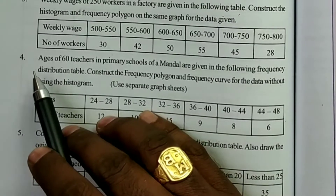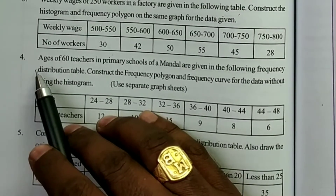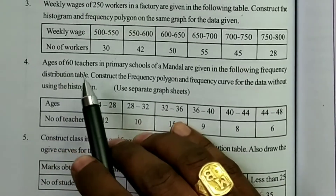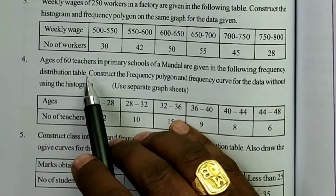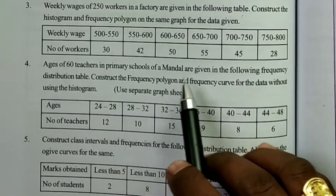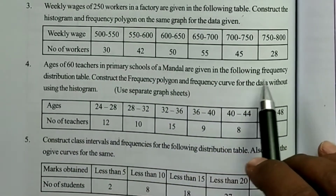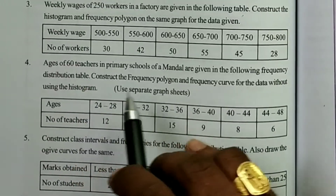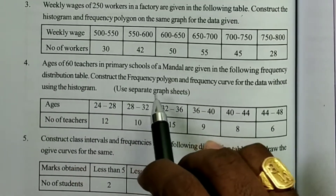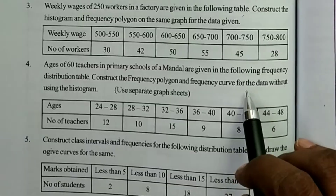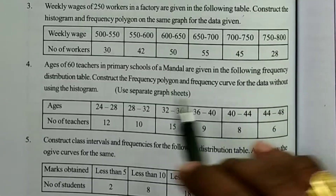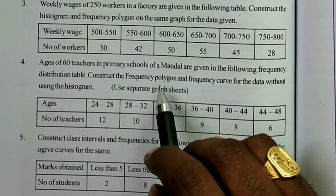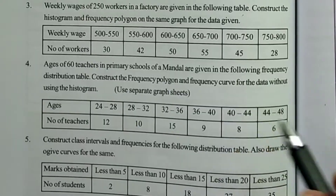The question is the fourth one: Ages of 60 teachers in primary schools of Mandel are given in the following frequency distribution table. Construct the frequency polygon and frequency curve for the data without using histogram.